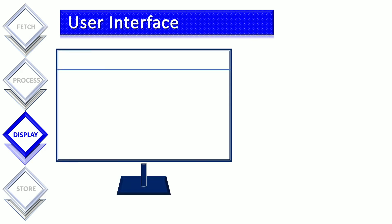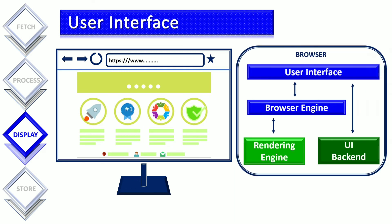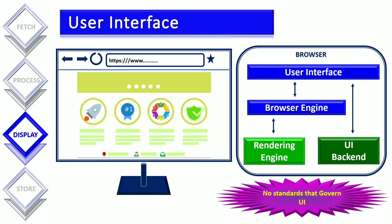The second component responsible for displaying the web page is the user interface of the browser. This is the front-end visual appearance of the browser, and it consists of the forward and backward buttons, reload button, address bar, and bookmarks button, along with the window displaying the requested web page. Based on user action, the user interface communicates with other components in the browser, and there are no specific standards that govern the user interface.